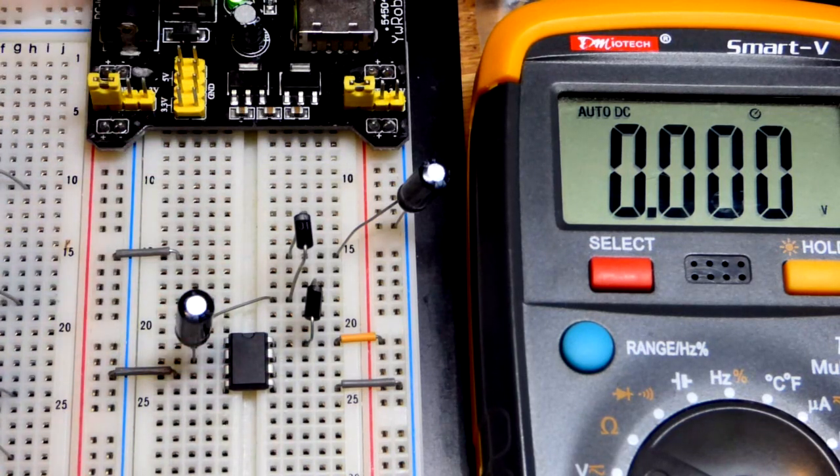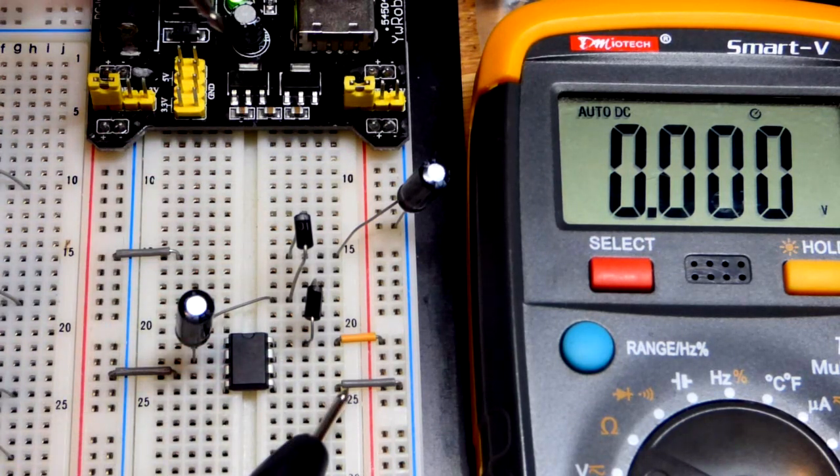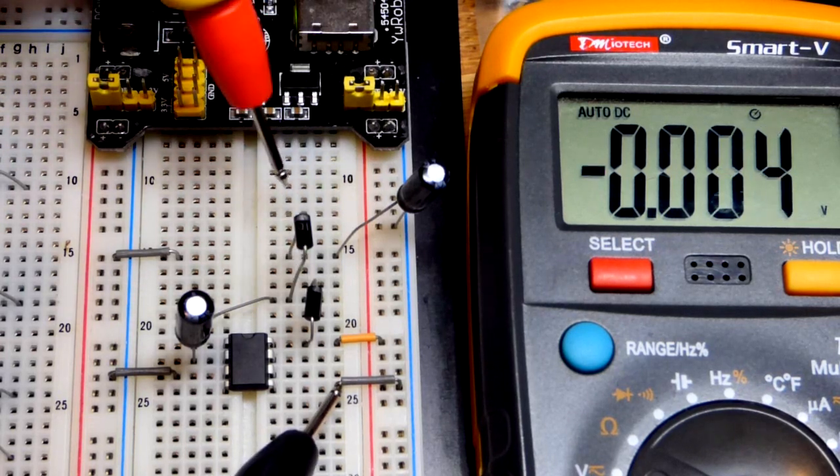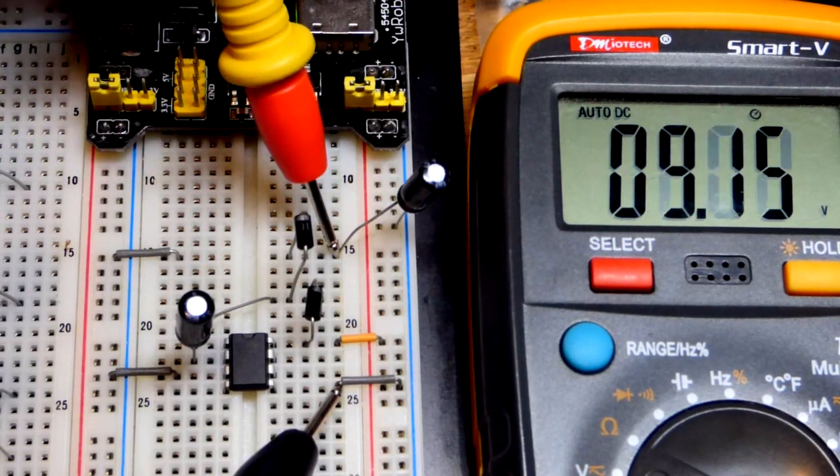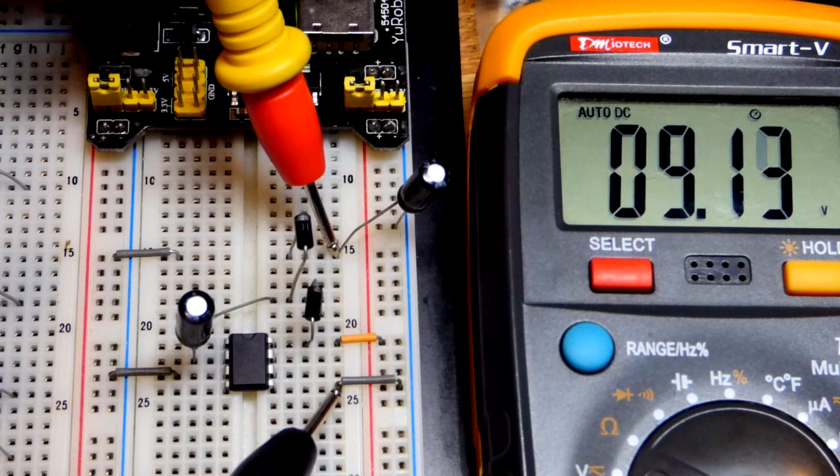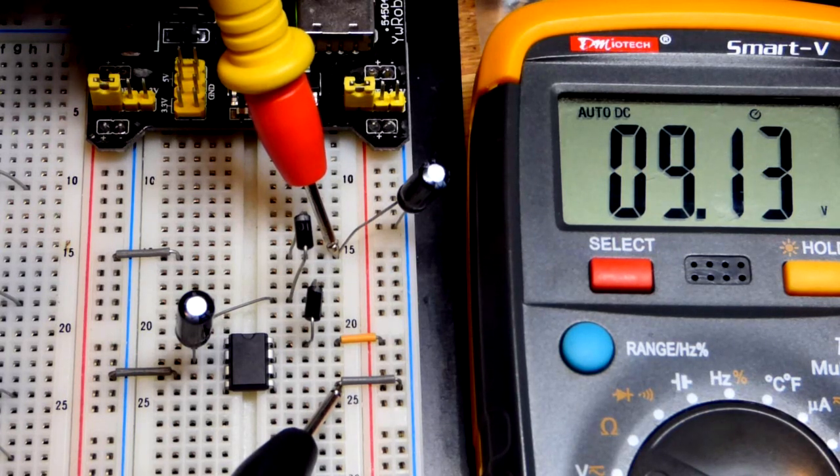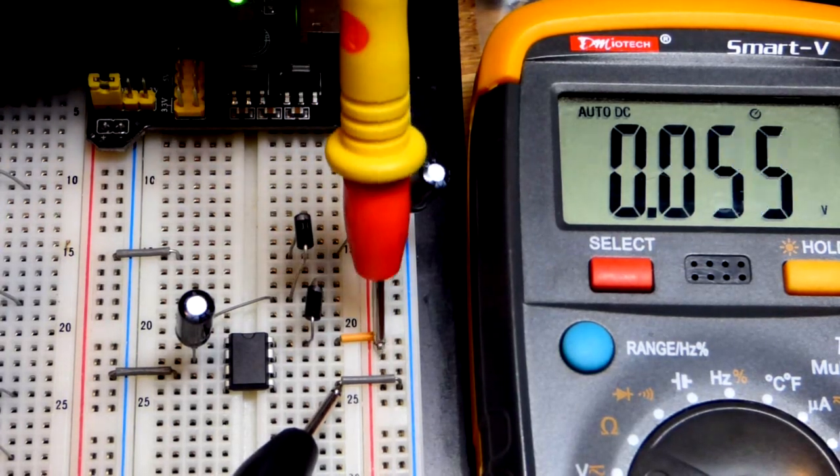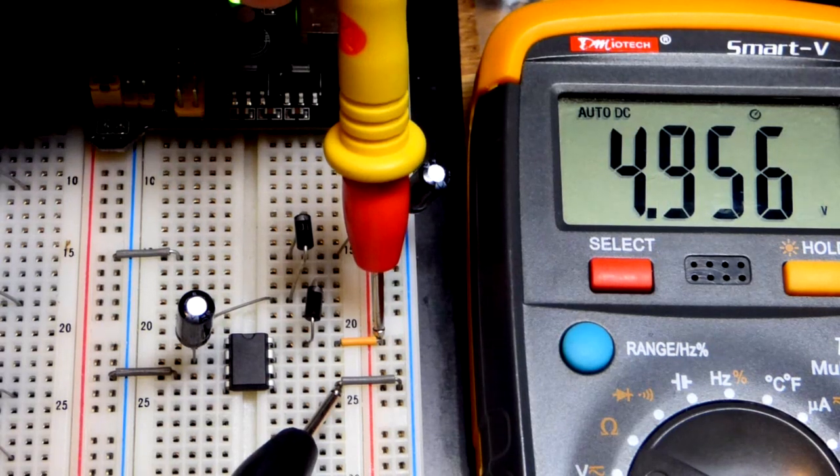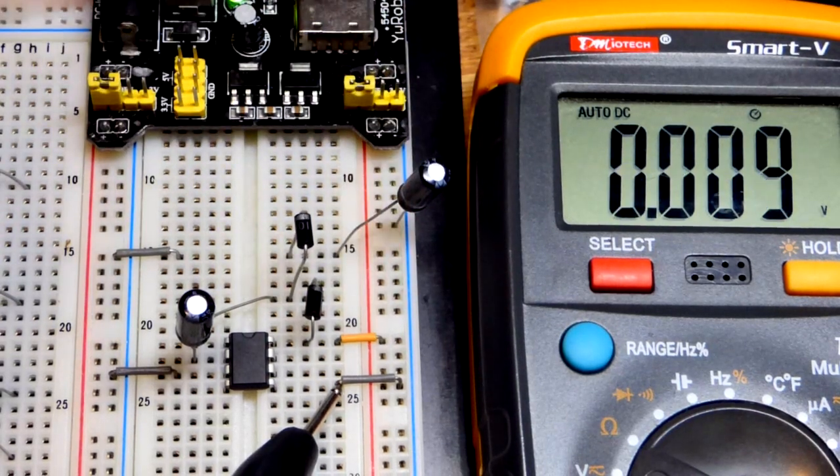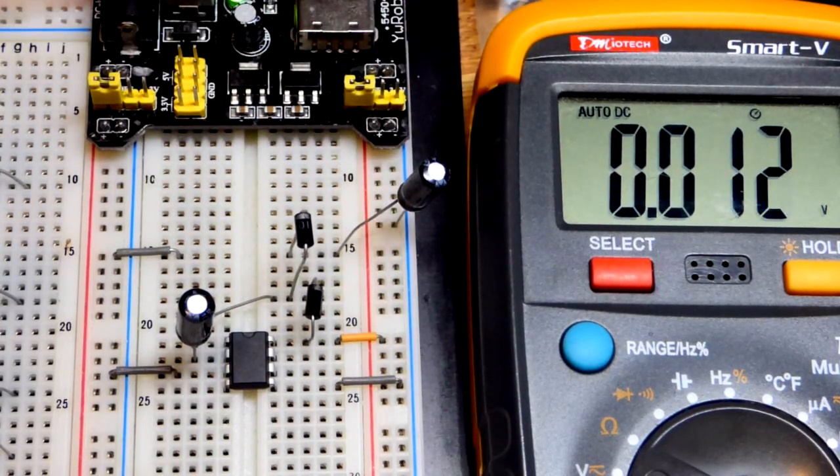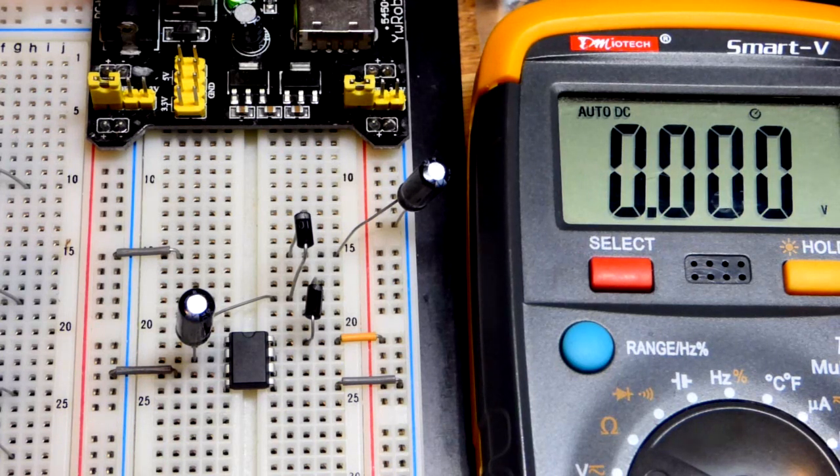You can see it's pretty close to ten volts right there. It is a five volt power supply—I'm using the breadboard power supply you see up here. We're going to add a load because this really cannot power much, as we will see.